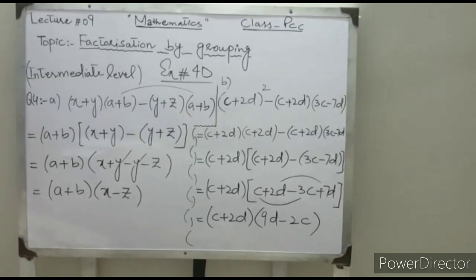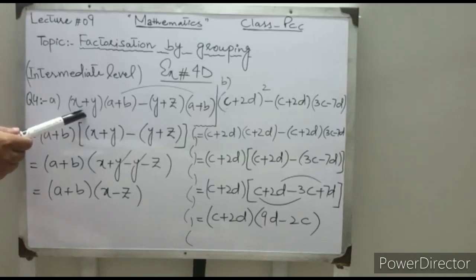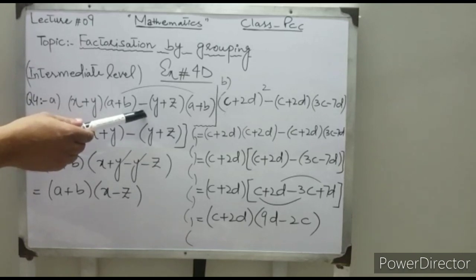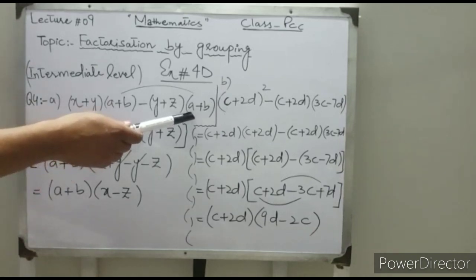Students, you will now be able to do all the remaining parts of the basic level questions — questions 1, 2, and 3. From question number 4 we start the intermediate level. In question 4 part A, we have four factors: (x plus y)(a plus b) minus y(a plus b) plus z(a plus b).